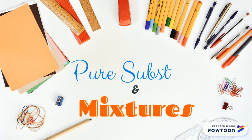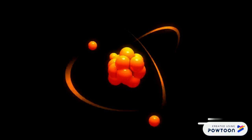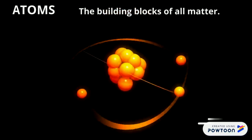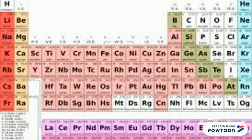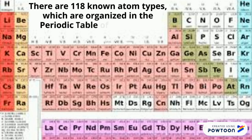Pure Substances and Mixtures. Atoms are the building blocks of all matter. There are 118 known atom types, and they've been organized in the periodic table of elements.